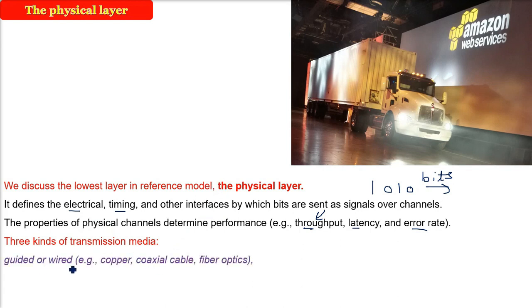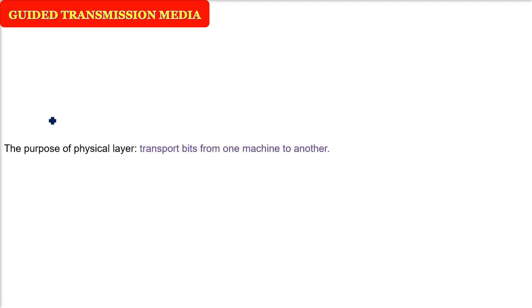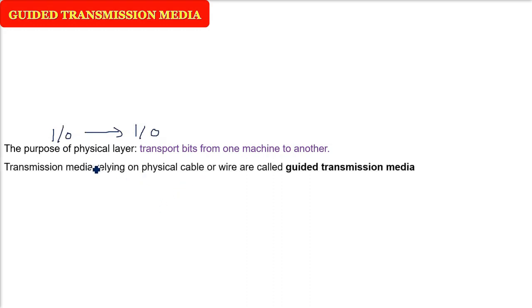There are three kinds of transmission media. First, guided or wired — copper, coaxial cable, and fiber optics. Second, wireless — terrestrial radio. Third, satellite. Guided transmission media means there is a physical cable or wire you can touch and feel. Bits travel from source to destination through a cable or wire, and since the signal transmission is guided by that physical wire, we call it guided.